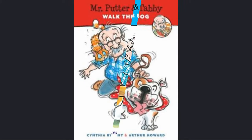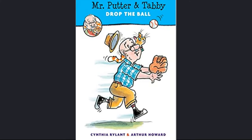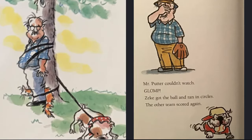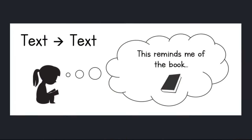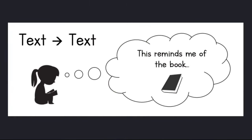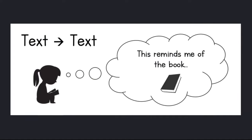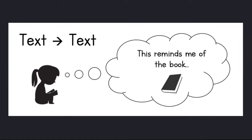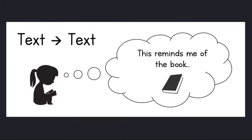When I read the book Mr. Putter and Tabby Walk the Dog, it reminded me of the story Mr. Putter and Tabby Drop the Ball. In both books, Zeke the Dog is causing trouble. I made a text-to-text connection because I noticed that the characters had a similar problem. Sometimes you can make a text-to-text connection when the events in one story remind you of the events in another book.